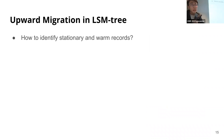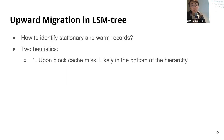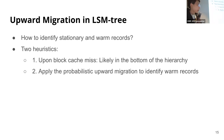One question that arises is: how do we identify candidate records for upward data migration? A naive solution would be to always migrate every accessed record in the LSM tree. This would bring up stationary and warm records, but it would also cause a lot of unnecessary writes to the LSM tree. Instead, we propose two heuristics. One is based on the observation that data blocks near the top of the tree hierarchy are typically well cached, so bringing up records already cached in the block cache gives little benefit. We therefore only consider records whose access incurs a block cache miss, which is a good approximation that these records are likely in the bottom of the tree hierarchy. We also apply the same probabilistic upward data migration as in the B-tree case to identify warm records. These two heuristics together help identify stationary and warm records while significantly reducing unnecessary writes.